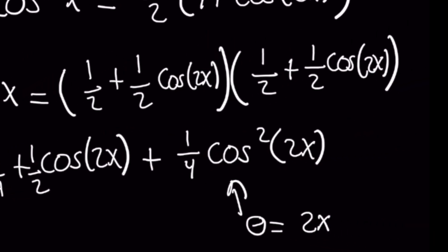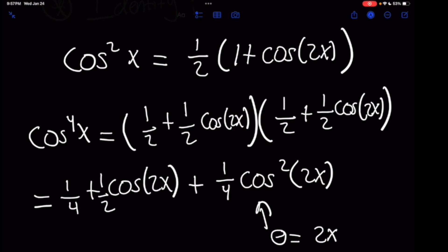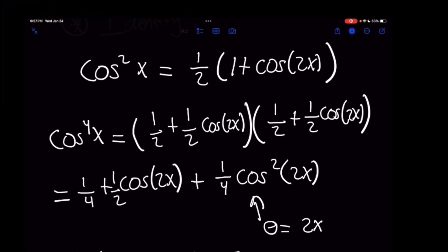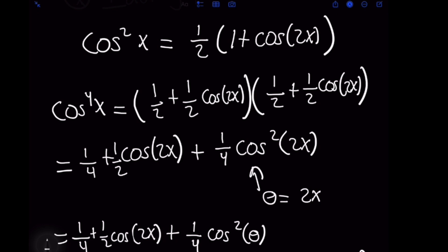Now what you have to notice here is when we use the identity above, it was cosine squared of x that we were using it for, but here now we've introduced this term that is cosine squared of 2x. Now you may have already memorized what that identity should be, but this video has the point of not relying solely on memorization.